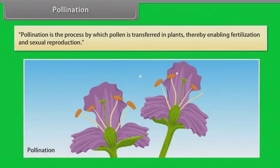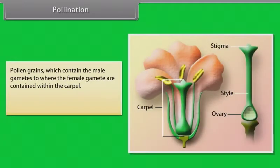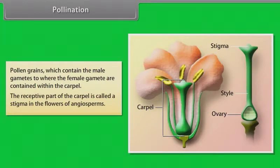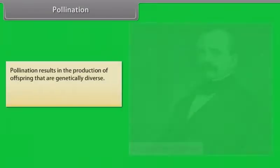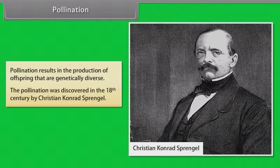Pollination is the process by which pollen is transferred in plants, thereby enabling fertilization and sexual reproduction. Pollen grains contain the male gametes and are transferred to where the female gametes are contained within the carpel. The receptive part of the carpel is called a stigma in the flowers of angiosperms. Pollination results in the production of offspring that are genetically diverse. Pollination was discovered in the 18th century by Christian Conrad Sprengel.